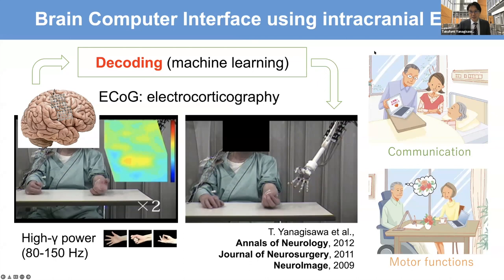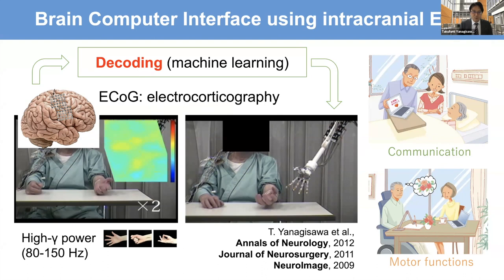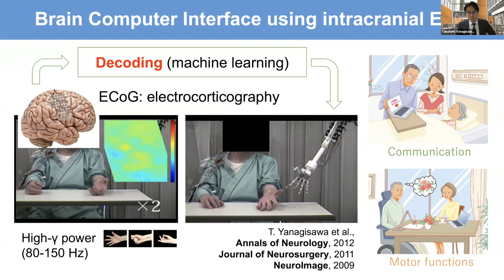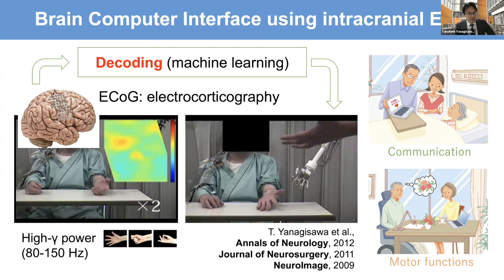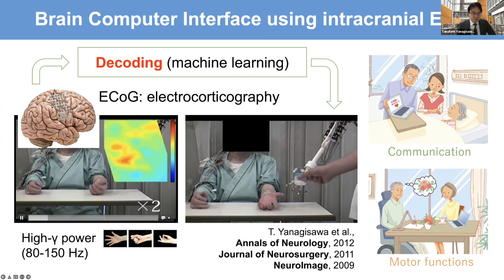Let me start with what BCI is and what we have been developing. We use invasive brain signals — we implant electrodes on the human brain and record signals from the cortical surface. Using these ECoG signals for BCI purposes, we can obtain activity patterns and instruct the subject to move their hand and record the brain signals corresponding to each different type of movement.